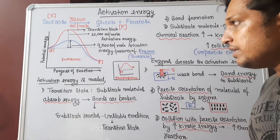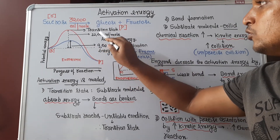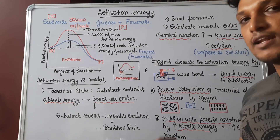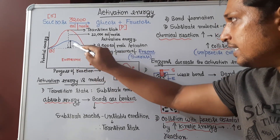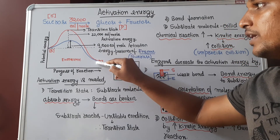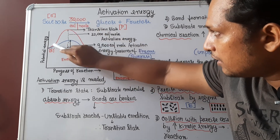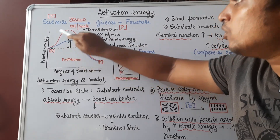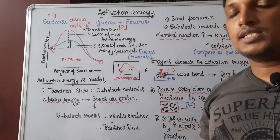Enzymes decrease the activation energy, so hydrolysis of sucrose in the presence of enzyme needs only 9,000 calories per mole of energy instead of 32,000 calories. That is how enzymes, by decreasing the activation energy, speed up the rate of reaction. In the absence of enzyme, you need more time and more activation energy. This is the concept of activation energy.